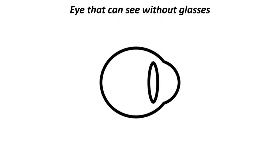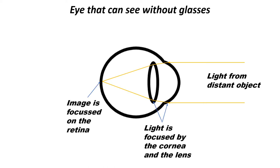In an eye that does not need glasses, when you are looking at a distant object such as a TV screen, the lens stays in its weakest state and the eye does not have to apply extra focusing effort. The light from the distant object enters the eye and is focused by the cornea and the lens onto the retina so that you can see clearly.